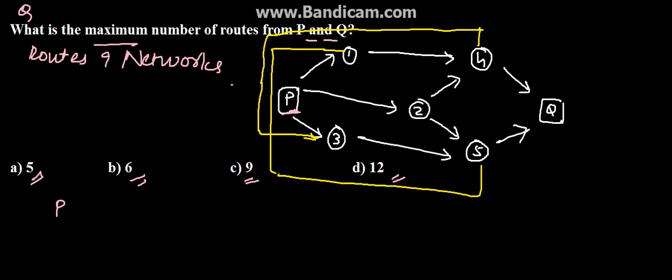this is P and this is Q. The first route can be P, 1, 4, and Q. This is P, 1, 4, and Q - this is the first route. Then the next route can be P, 2, 5, Q.